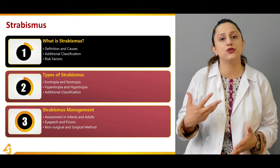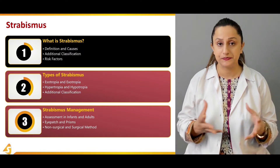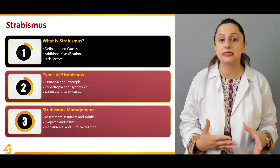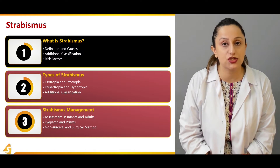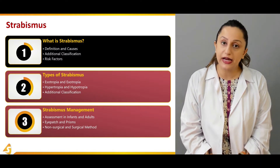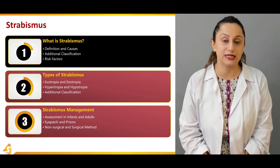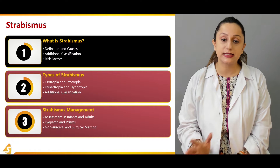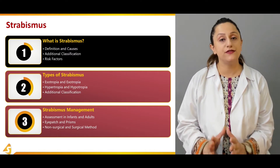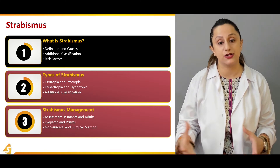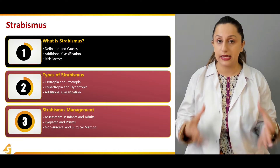Causative factors can include birth trauma and conditions during birth, all of which can manifest as strabismus in a child. We'll also be discussing additional classifications of strabismus and the particular risk factors related to this condition in children and adults.